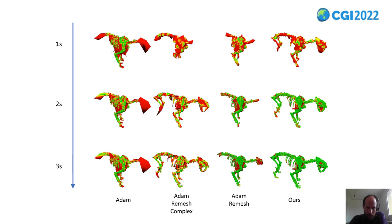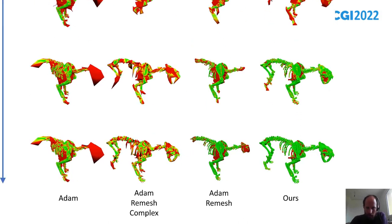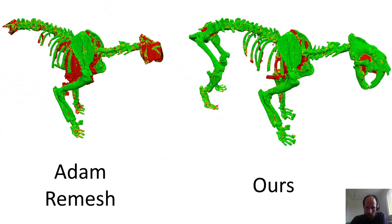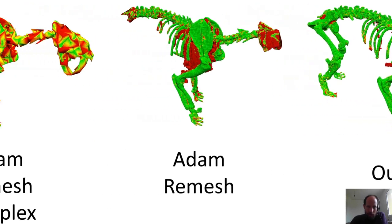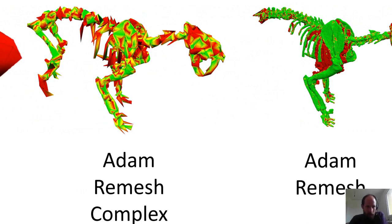So here again, on the right-hand side, our method with fine details and a complete reconstruction, almost complete. The Adam with remeshing with default parameters have also small triangles, but the hind legs are completely missing. And the Adam with remeshing and complex tuning can reconstruct the hind legs, but uses very large triangles and misses fine details.